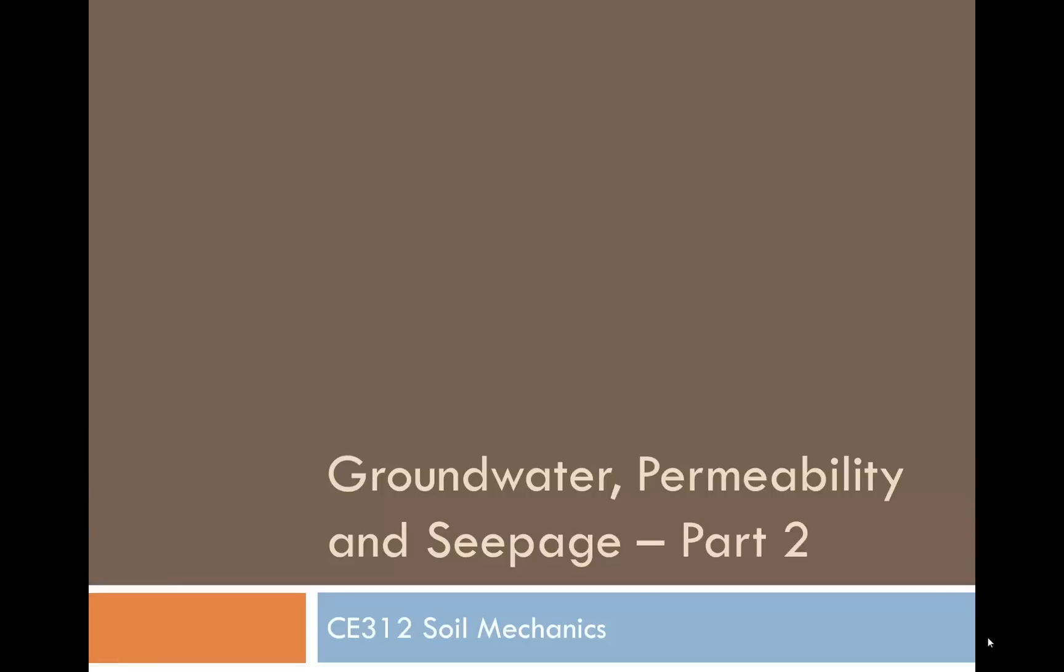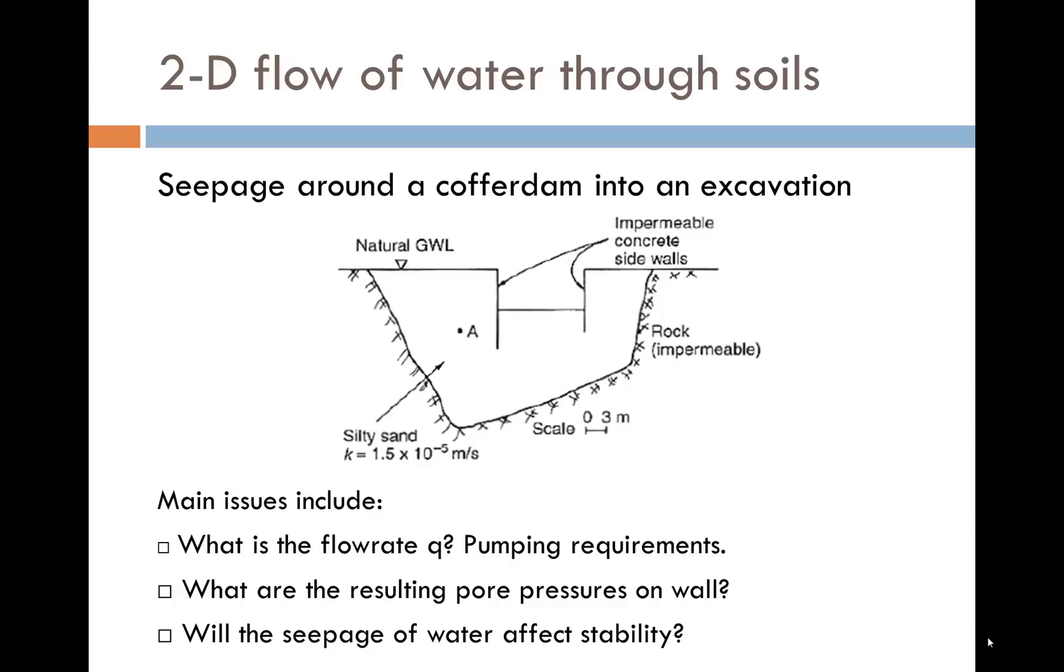Groundwater Permeability and Seepage Part 2. This is a schematic of a cofferdam. A cofferdam is a watertight structure, usually of steel sheet pile or concrete board pile walls, pumped dry to enable construction work to be carried out within.